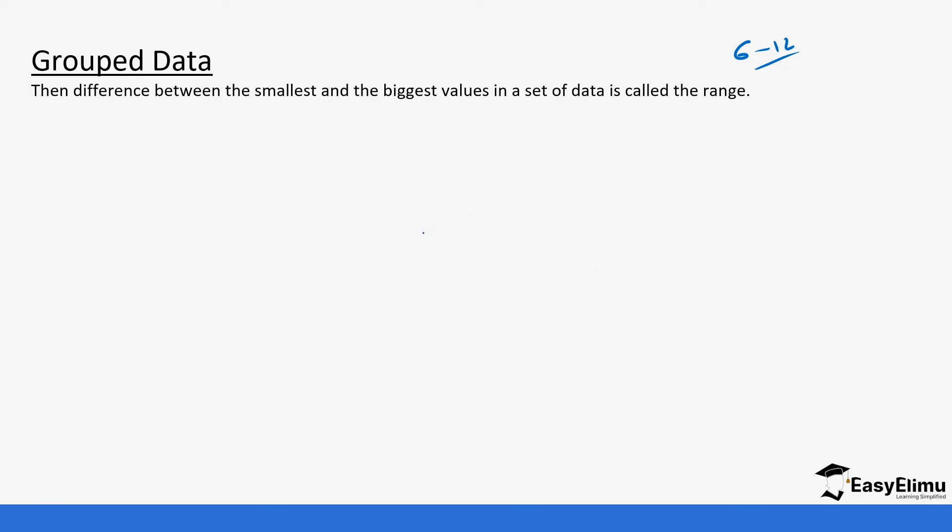What we do is pick the smallest value in the data and the biggest value, then get the difference. When we get the difference, we can decide the width of the data we want to use is 4, 5, 10, or 15. When we do the division, we get the classes we want. I'm going to show you how we do that.